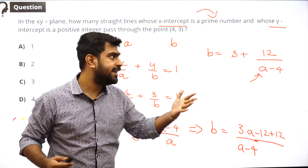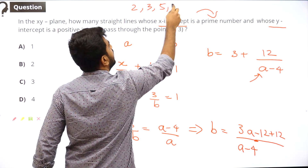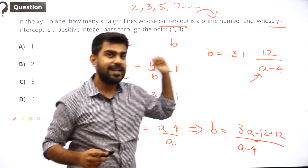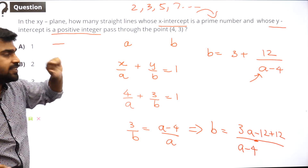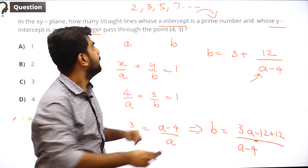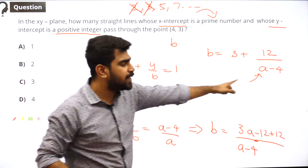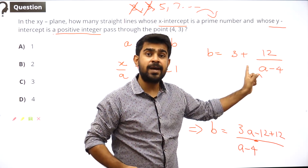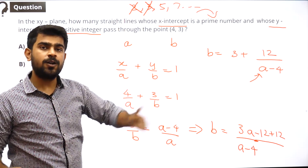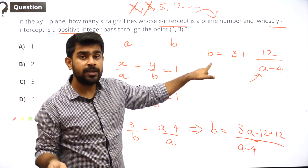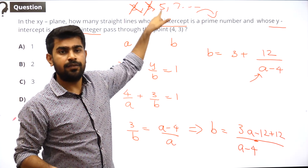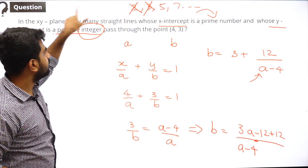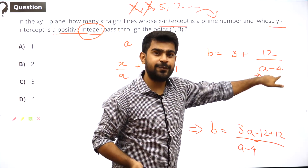Since a is prime, it can take values like 2, 3, 5, 7, and so on. When a is 2, b = 3 − 6 = −3, which is negative. When a is 3, b = 3 − 12 = −9, also negative. But b must be a positive integer, so 2 and 3 are ruled out. For b to be a positive integer, a − 4 must divide 12.